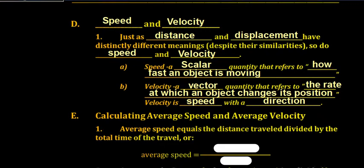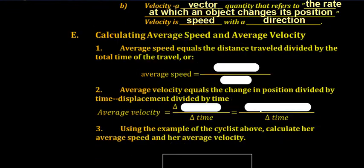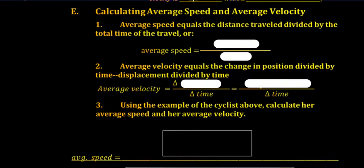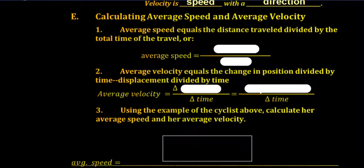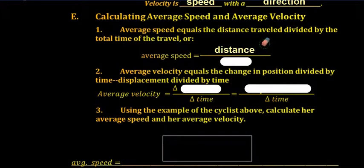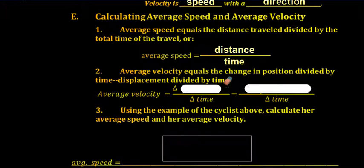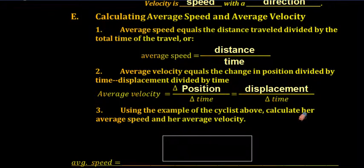Average speed is the total distance traveled divided by the total time of travel, or distance divided by time. Average velocity is the change in position divided by time, or displacement divided by time.